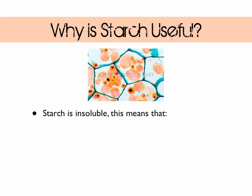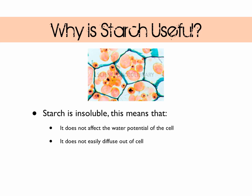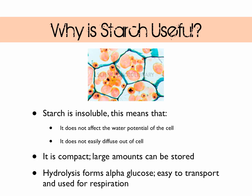Why is starch useful? Starch isn't soluble, so it doesn't affect the water potential of the cell. If it was soluble it would reduce the water potential, drawing in water via osmosis - that's bad because it can lead to osmotic lysis and breaking of the cell. It also doesn't easily diffuse out of the cell, so wherever it's formed, that's where it stays. The helix makes it compact, so loads of starch can be stored in a very small space. When you hydrolyse starch, you form alpha glucose which is easy to transport and used for respiration.